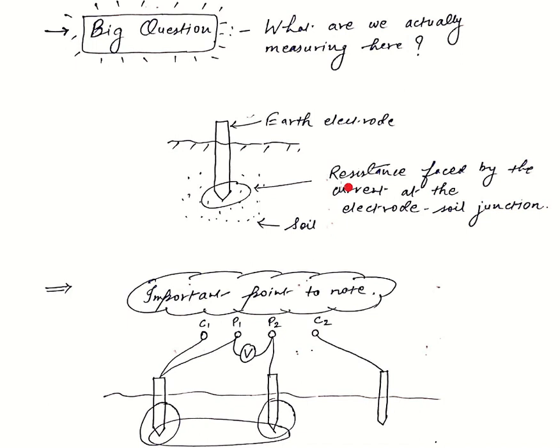Earth resistance means the resistance faced by current at the electrode-soil junction. This is the earth electrode, and earth resistance means the resistance faced by the current at this junction, the electrode and soil junction. And this earth resistance should be low for safety reasons.